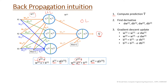This forward pass is for one training example; we can vectorize it for m training examples. The second step is to find the derivatives. The learnable parameters here are all the weights — w11, w21, w12, w13, w23, w33 — and the biases going to all neurons. These weights and biases are all learnable parameters that we need to update.